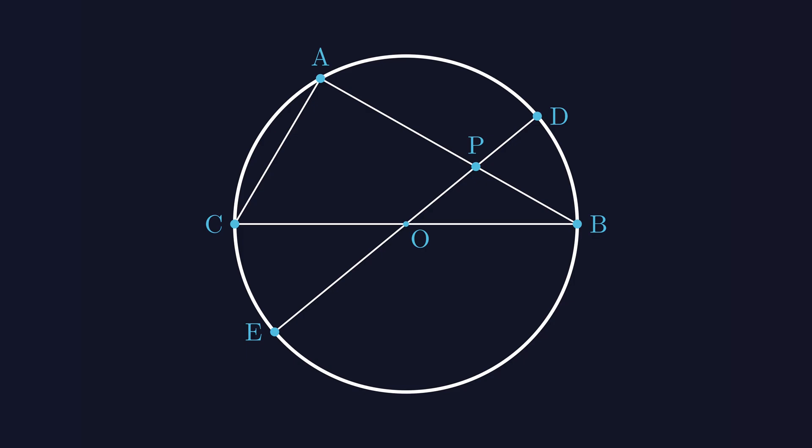Imagine we have a figure like this. Let's say point O is the center of the circle. We'll call angle B as alpha. An angle inscribed in a semicircle is always 90 degrees.